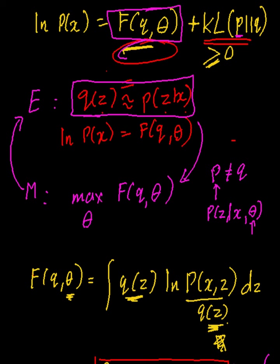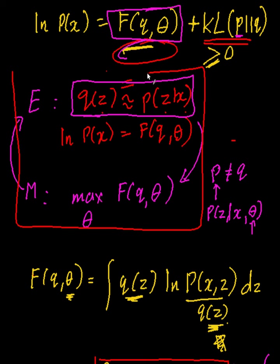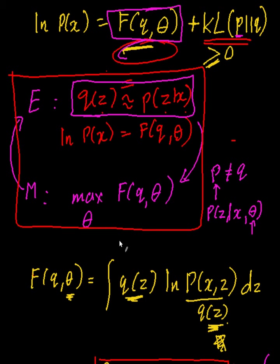So this is the final algorithm — the final idea you should use to do EM. You set your approximate distribution q(z) equal to p(z|x), the hidden variable given your data, and then you maximize with respect to θ. You keep iterating until you converge or have done enough iterations. That's it for the derivation of the EM algorithm. If you have any questions or comments, let me know — thanks for watching.